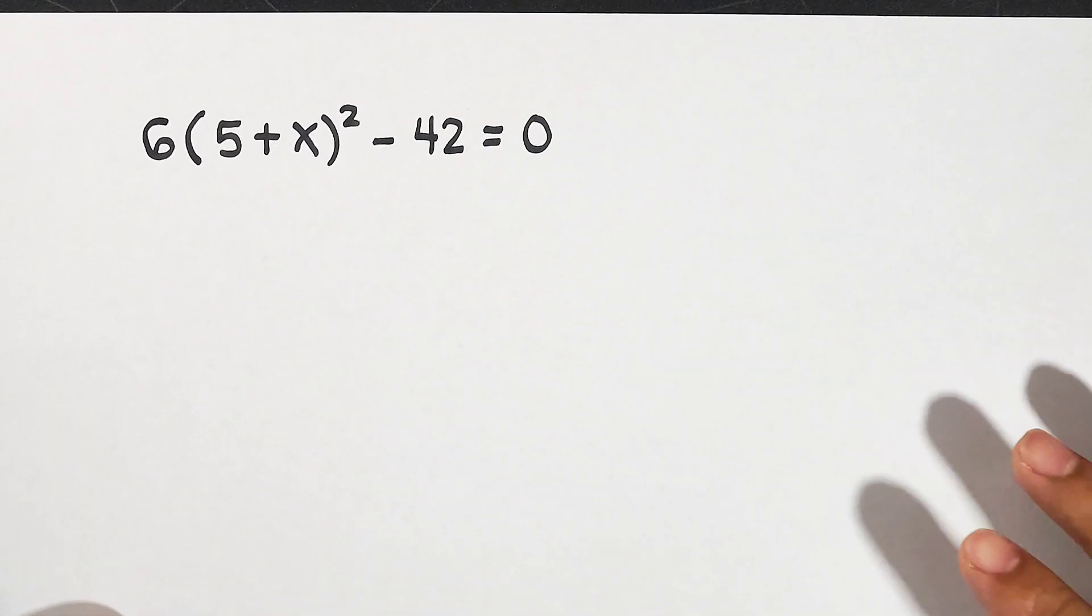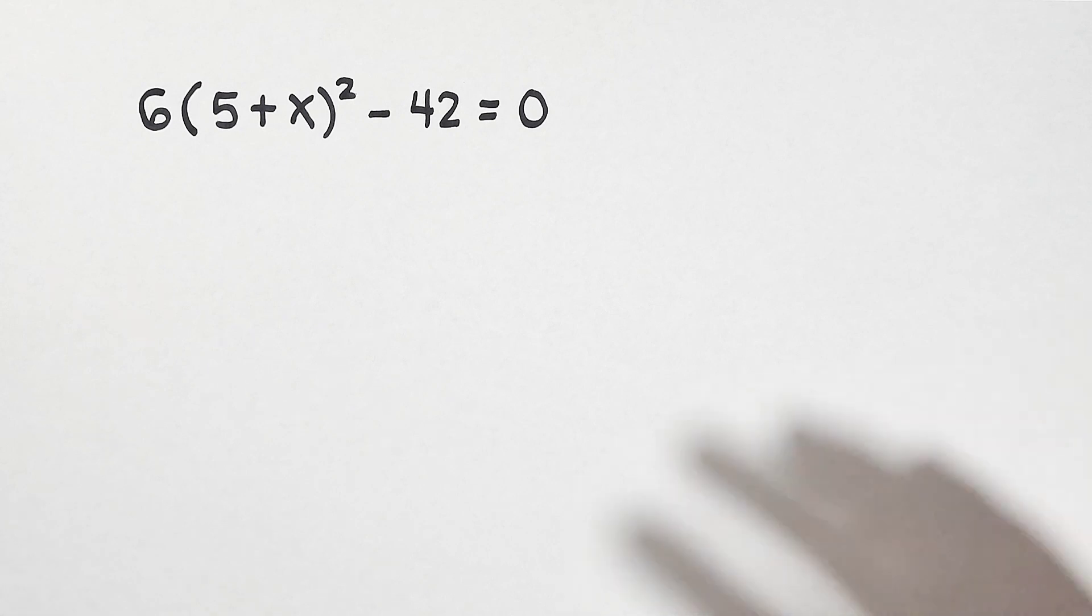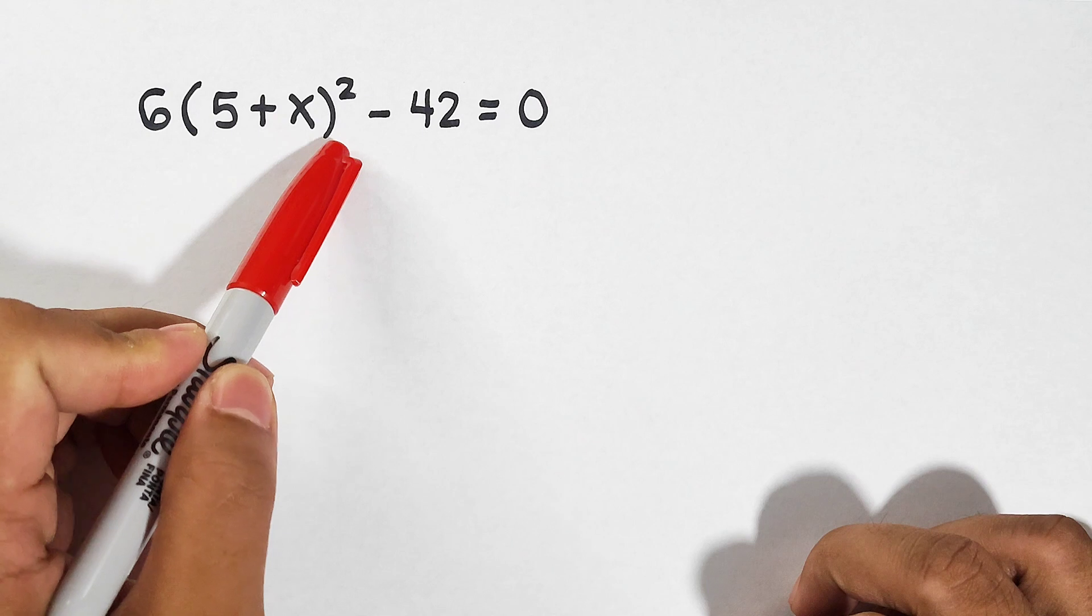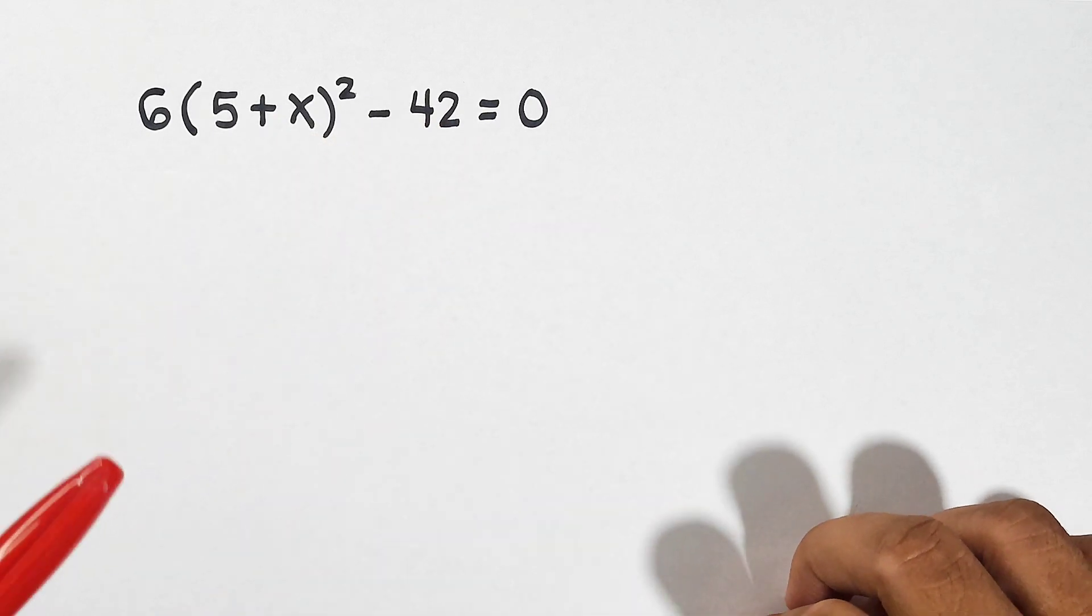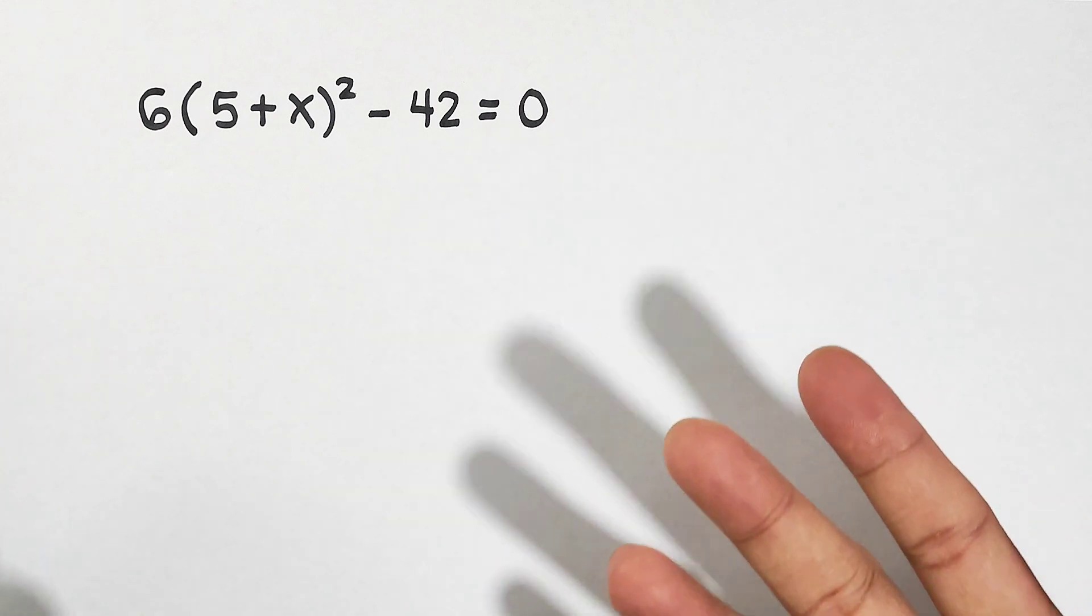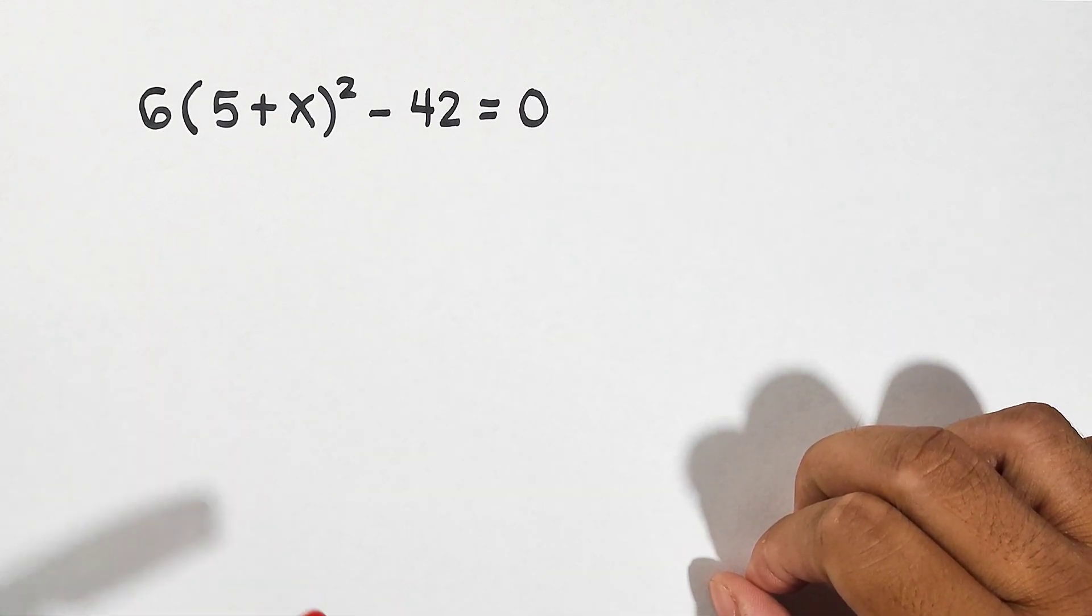So what we have here is the first problem. We are given the equation 6 times the quantity of 5 plus x raised to the second power minus 42. And to give you an idea, what we're going to use here is solving quadratic equations by extracting the square roots.